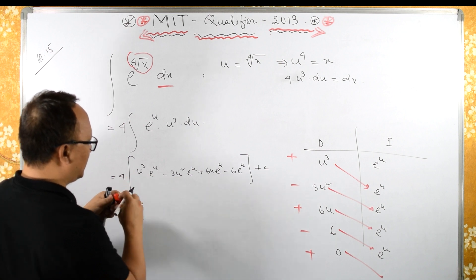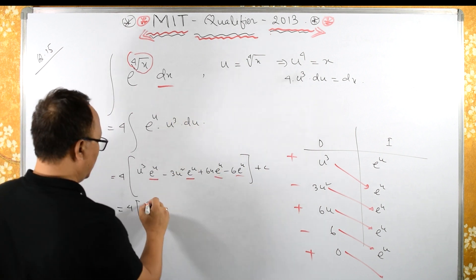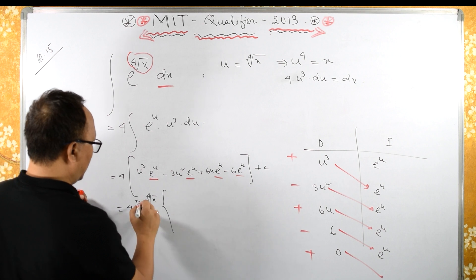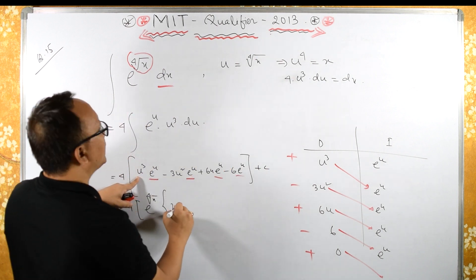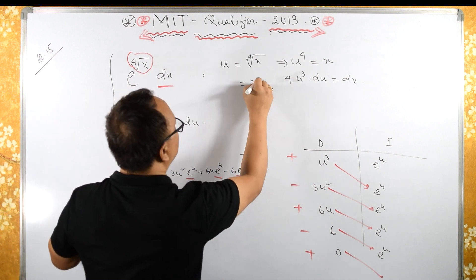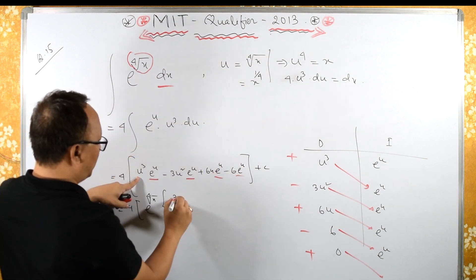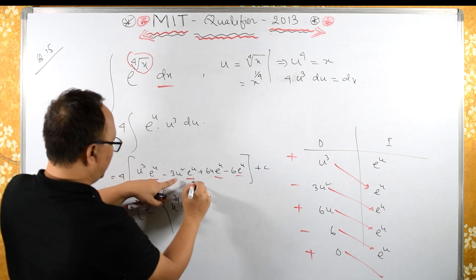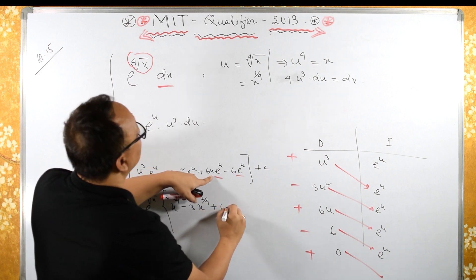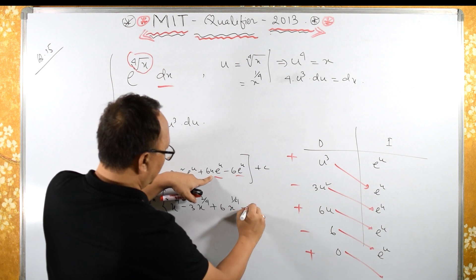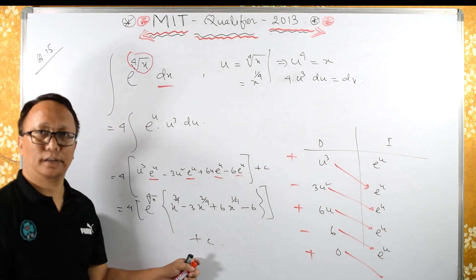Taking e raised to u common, where u is the 4th root of x, so u equals x to the 1/4. Therefore u cubed is x to the 3/4, minus 3u squared is x to the 2/4, plus 6u is x to the 1/4, minus 6, plus C. This is the required answer.